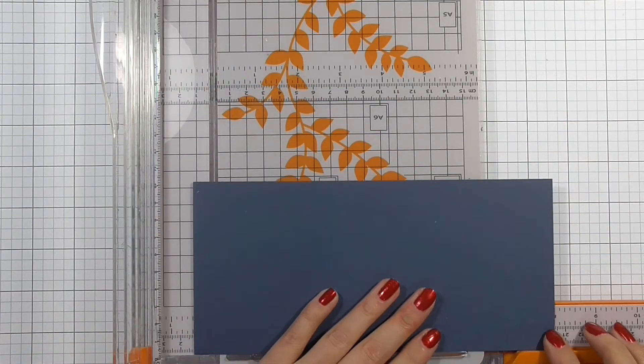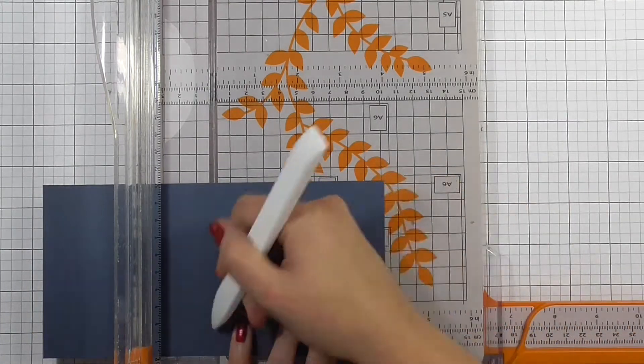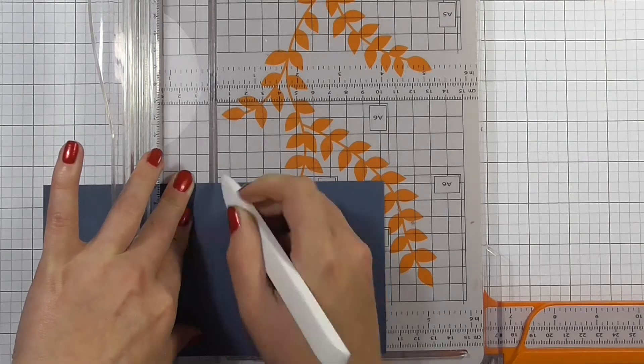So I'm taking some blue cardstock from Simon Says Stamp and I'm just cutting this down to four inches by eight, and then I'm scoring it along the middle at four inches. I decided to make a slightly smaller card today and I'm just using my Teflon bone folder.